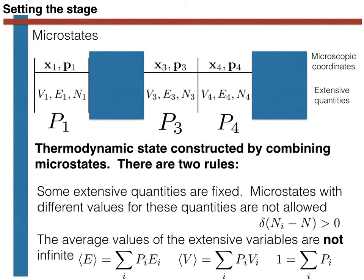Our next constraint was placed on the values of the remaining extensive thermodynamic variables. We said that the average values for these quantities were not allowed to be infinite. This introduces a probability distribution — in other words, we now have a probability for occupying each of the microstates in phase space. In the example shown, the system has a probability P1 of being in microstate 1, a probability P3 of being in microstate 3, and a probability P4 of being in microstate 4. Obviously, these three probabilities must add up to 1.